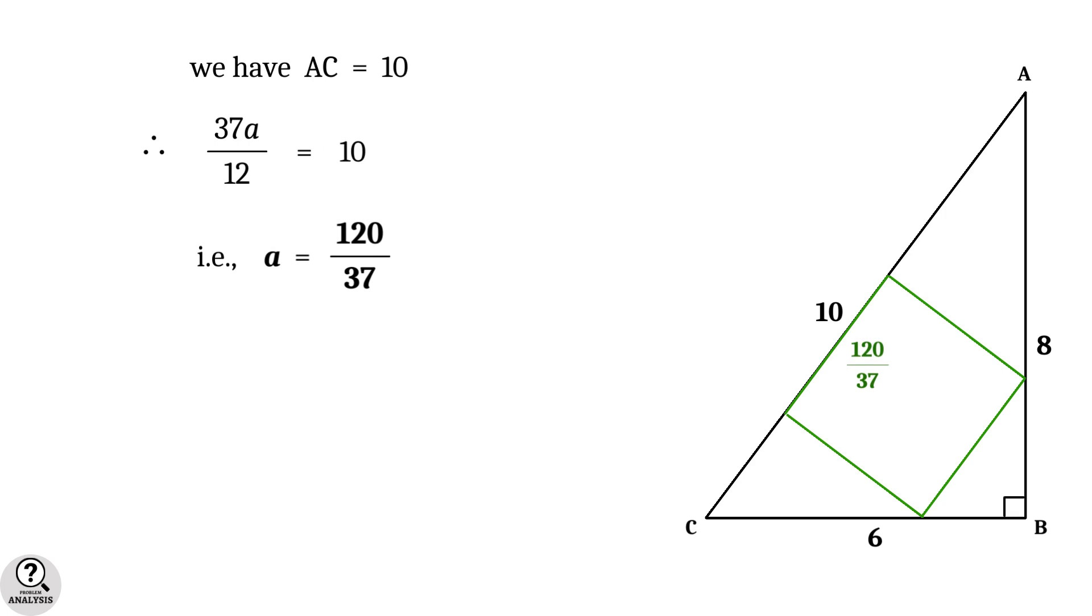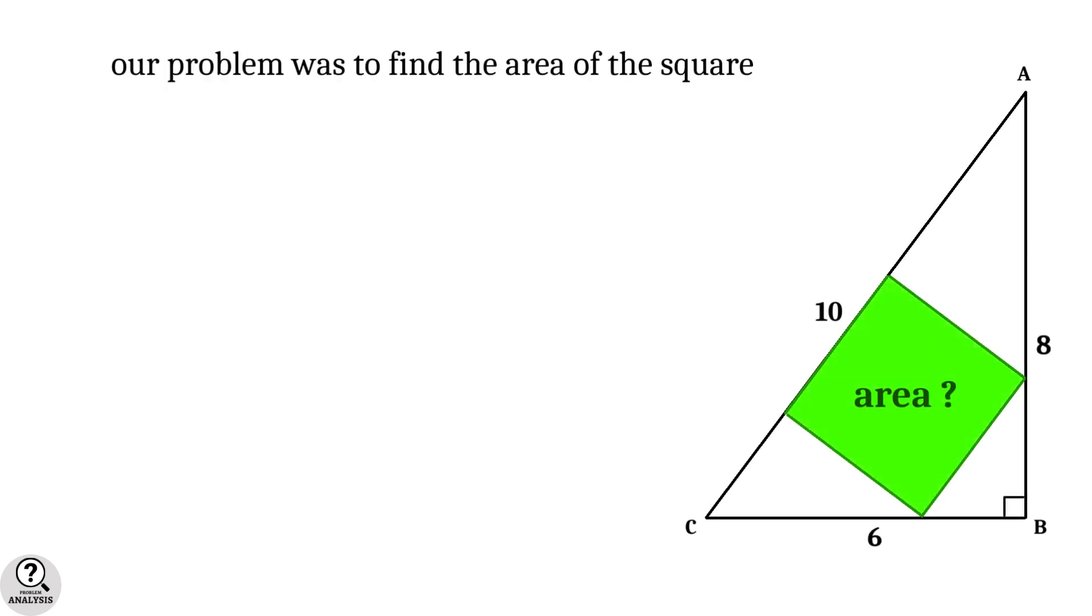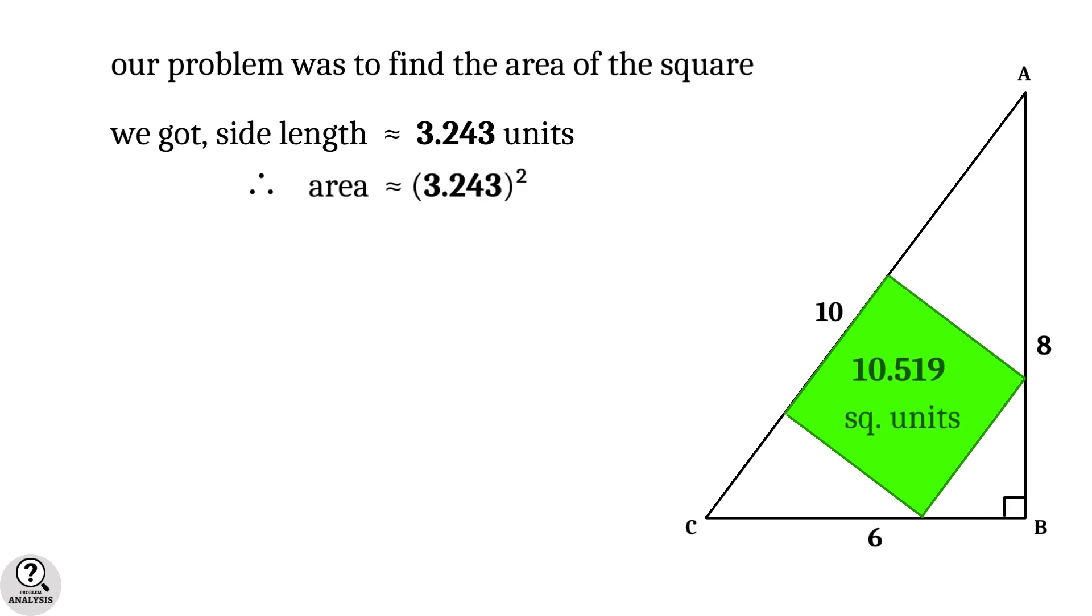Now we are done. Our problem was to find the area of the square, and we got the side length approximately equal to 3.243 units. Hence, the area of the square will be 3.243 whole squared, which is approximately equal to 10.519 square units. And that is the solution we are looking for.